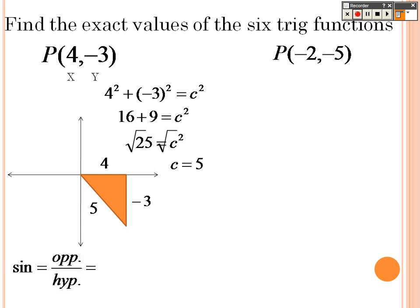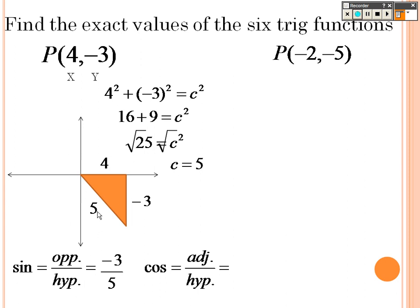Sine is opposite over hypotenuse, so opposite is negative 3 over hypotenuse, which is 5. Cosine is adjacent over hypotenuse, so that's 4 over 5. Tangent is opposite over adjacent, which is negative 3 fourths.